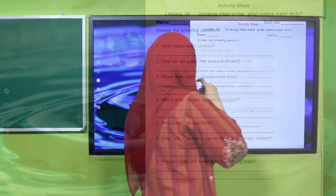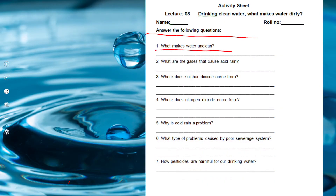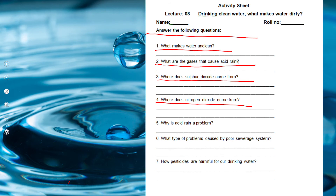Write down your name and roll number, then answer the following questions: What makes water unclean? What are the gases that cause acid rain? Sulfur dioxide, nitrogen dioxide, and carbon dioxide. Where does sulfur dioxide come from? From different factories and smoke. Where does nitrogen dioxide come from? It comes from the exhaust of cars and factories. What is acid rain? Why is acid rain a problem? What types of problems are caused by poor sewerage system? How are pesticides harmful for drinking water? You can take help from the book.